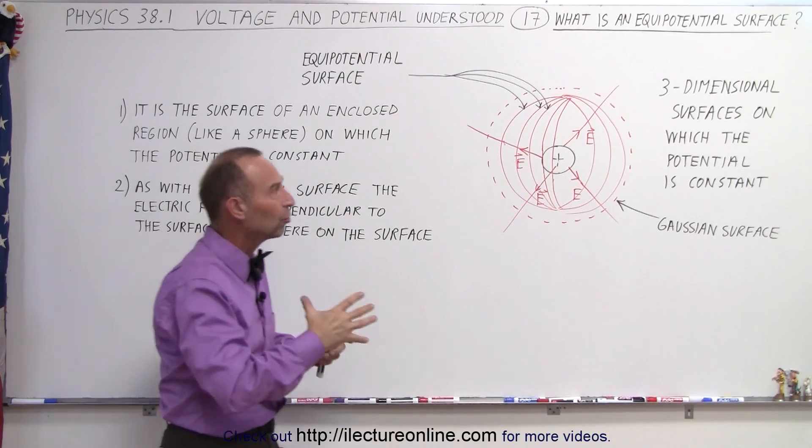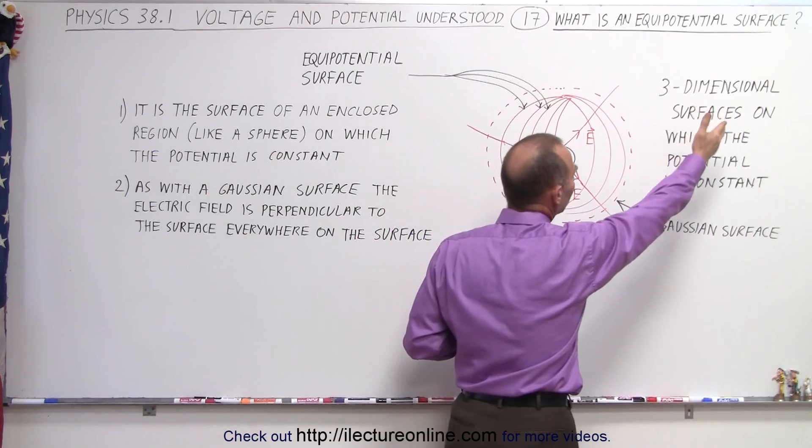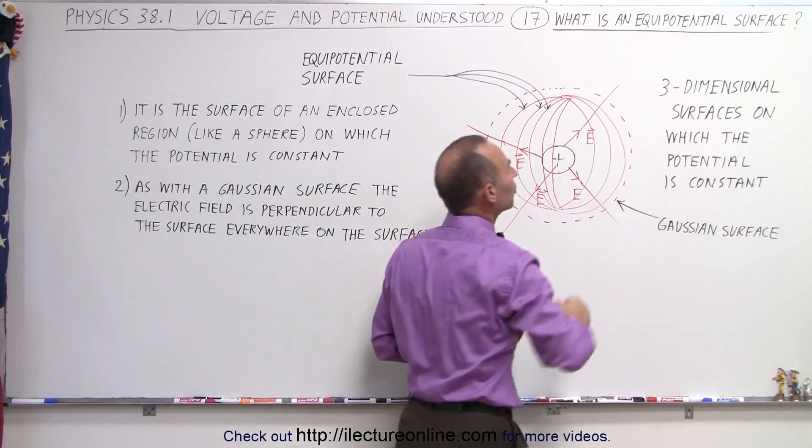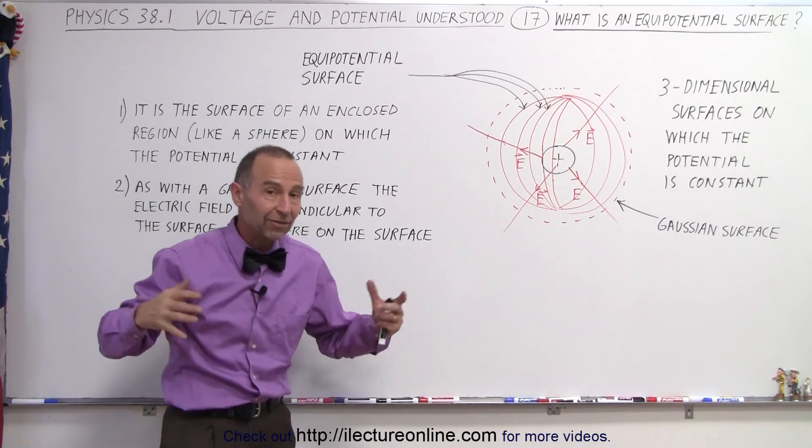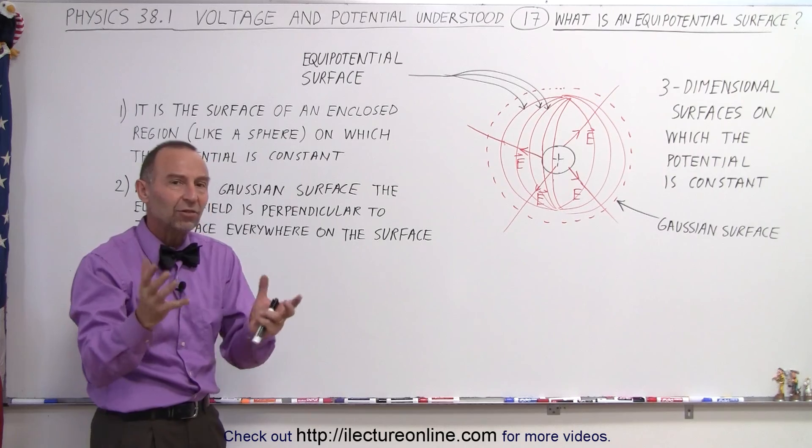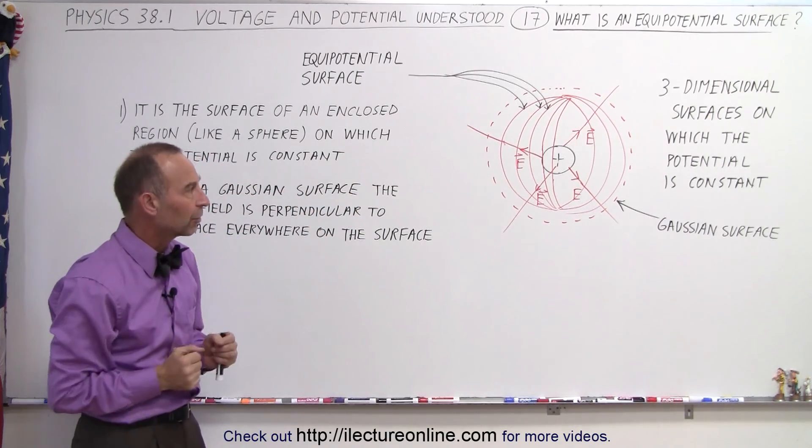So in three dimensions we can say that a three-dimensional surface on which a potential is constant can be considered an equipotential surface. That's the definition that anywhere along the surface the potential remains the same, the voltage remains the same along that surface.